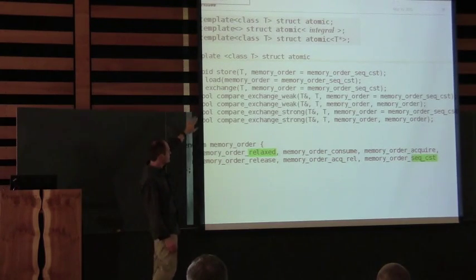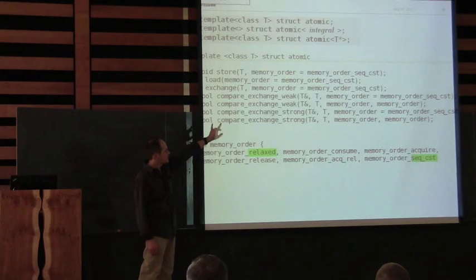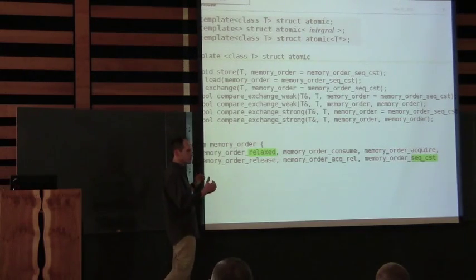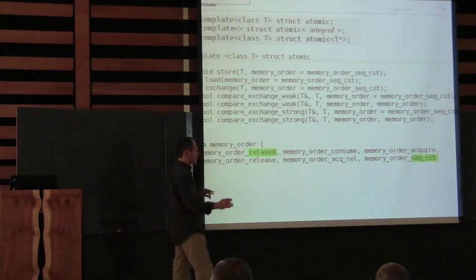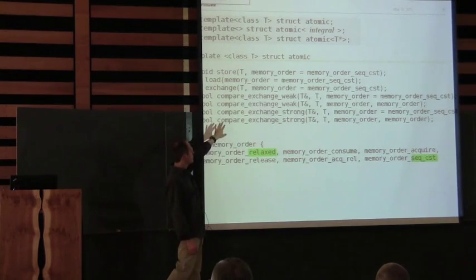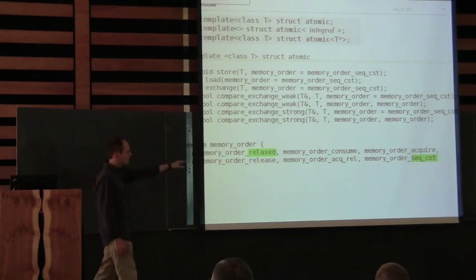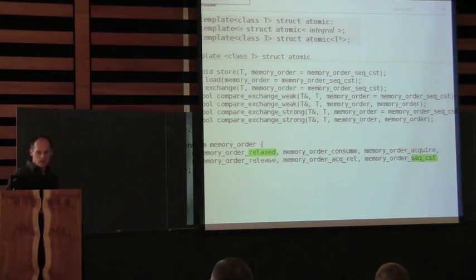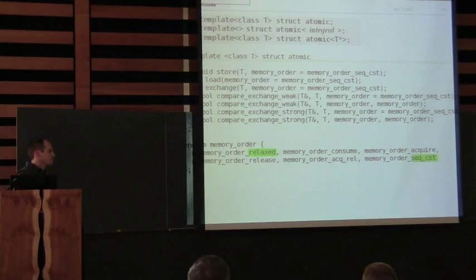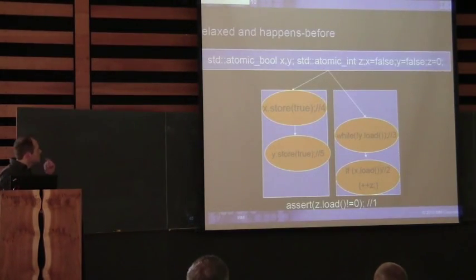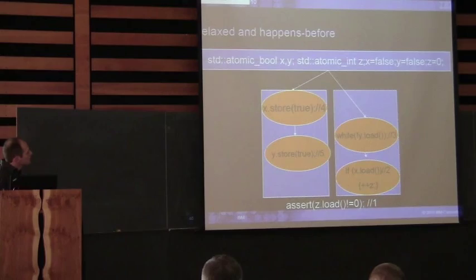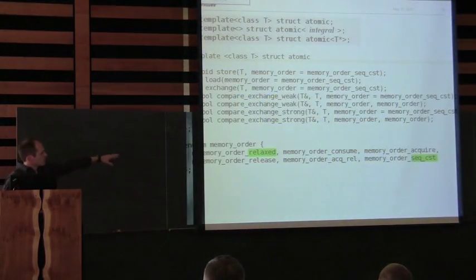All these compare exchange functions and the load have this memory order that you pass in all over the place. With sequential consistency you can say when you do an atomic operation that you want it to be sequentially consistent. Or you can say you want it to be relaxed. And there are other kinds of in-between memory orders — will it be a difference between using a full memory barrier? Yes, exactly.